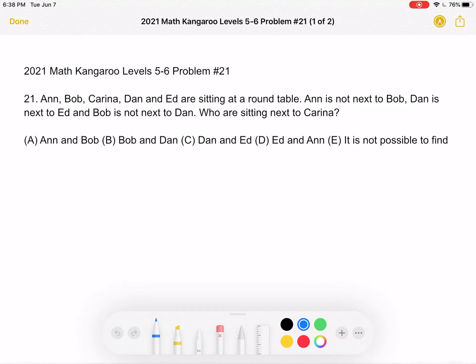Anne, Bob, Karina, Dan, and Ed are sitting at a round table. Anne is not next to Bob, Dan is next to Ed, and Bob is not next to Dan. Who are sitting next to Karina?